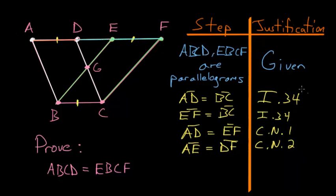And we'll again use this book 1, proposition number 34, but this time on the sides AB and DC. So, AB is equal to DC.